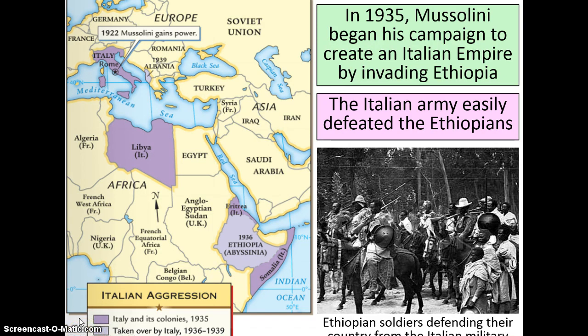Mussolini, when he takes power, not only promises to make the trains run on time and open up jobs, but also promises that the Mediterranean Sea will become their lake once again — comparing it to when the Roman Empire once existed. So he's definitely going to try to take over other places in northern Africa and other locations around the Mediterranean Sea.